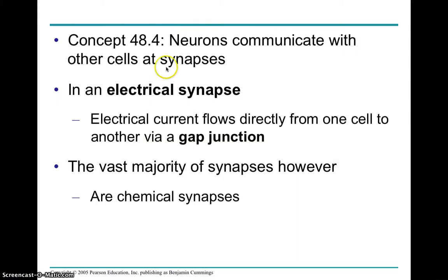This is part four, section 48.4, now getting into synapses. We've talked about how the impulse travels down the axon, called an action potential. Now we have to communicate from cell to cell. There are two types of synapses. There is an electrical synapse where the cells are directly connected through a gap junction, and ions essentially pass through the gap junction, continuing the depolarization into the next cell.